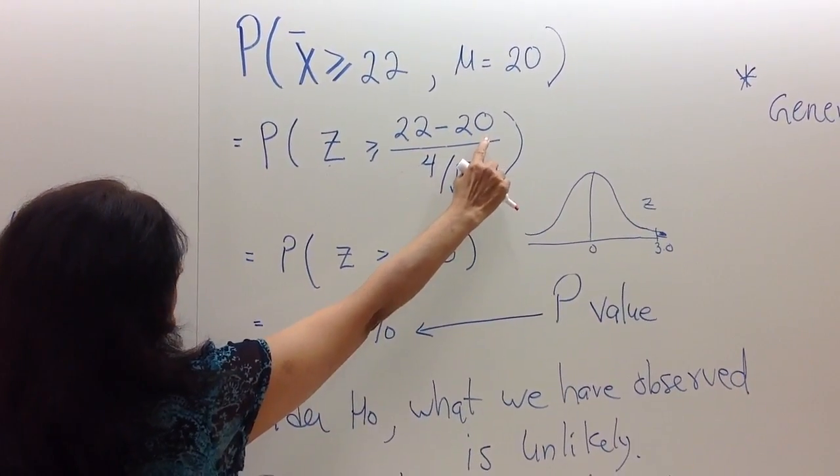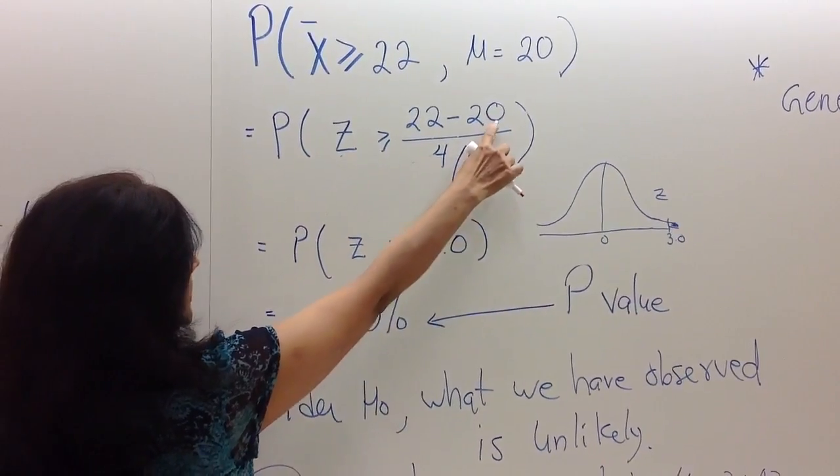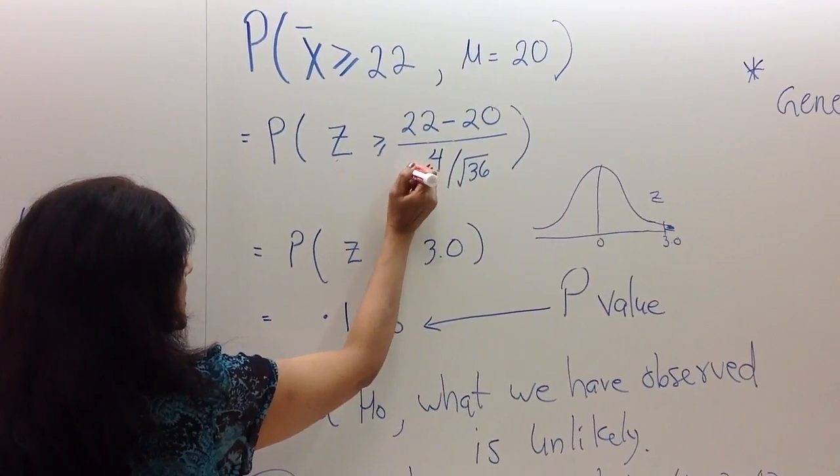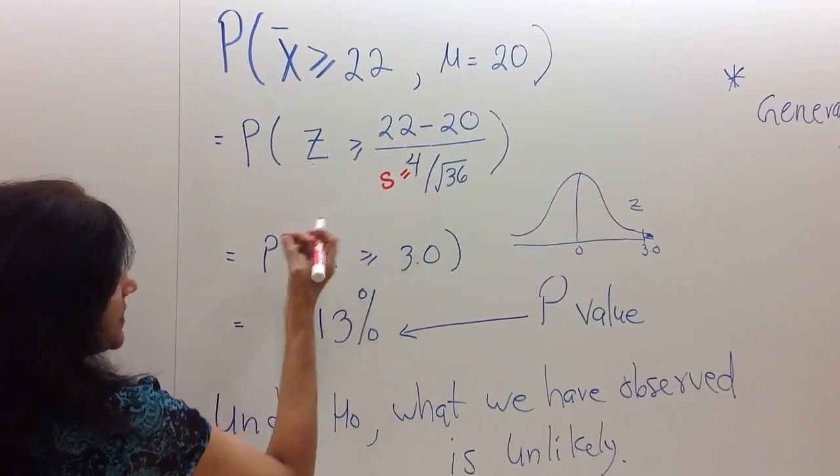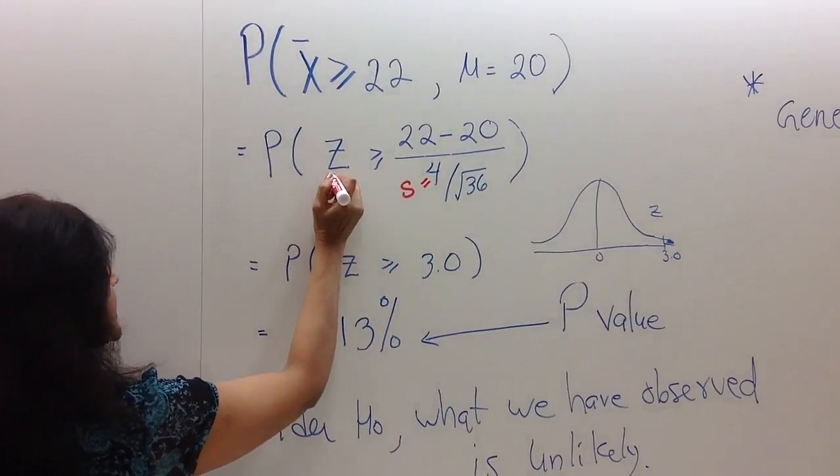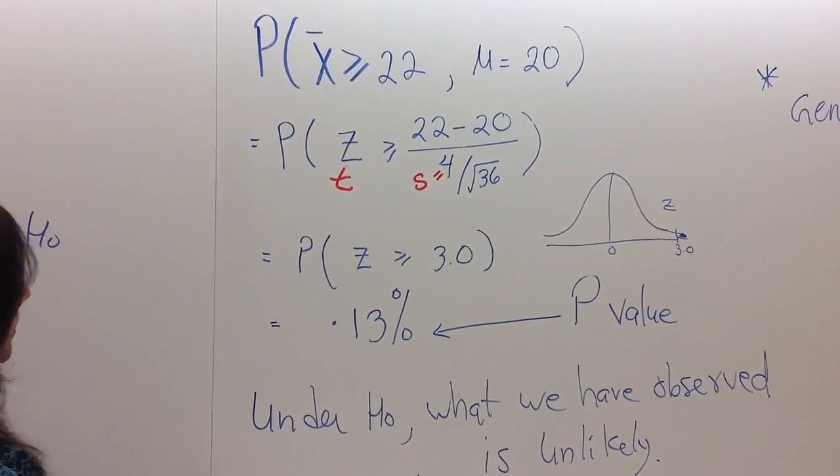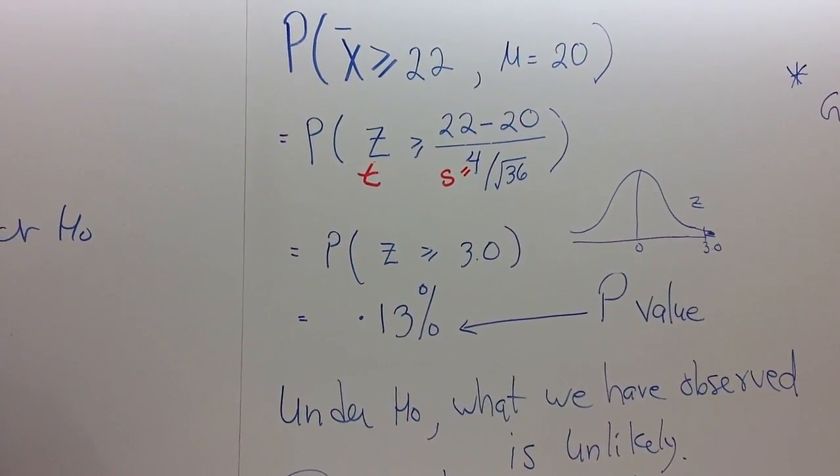We will change X̄, again, to a standard value by subtracting the mean, dividing by the standard deviation, but remember this S, this 4 represents S, not sigma, and as a result of that, this quantity that we have standardized is no longer called Z, it is called a T value.